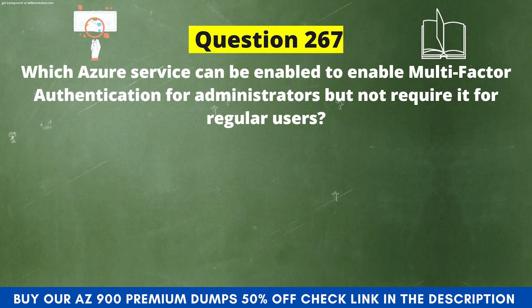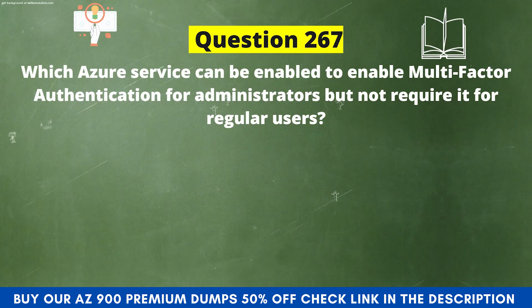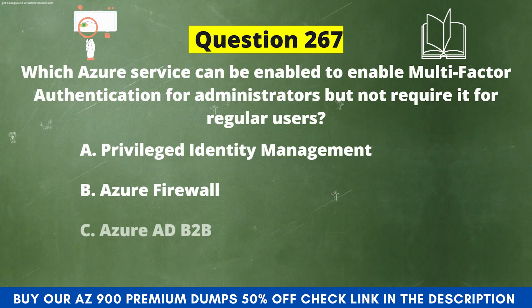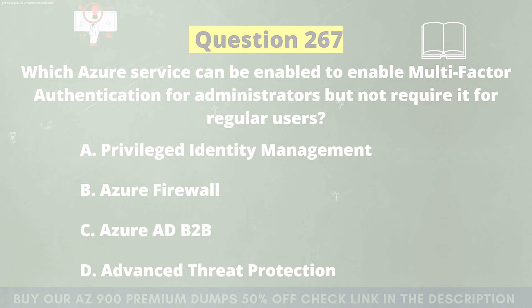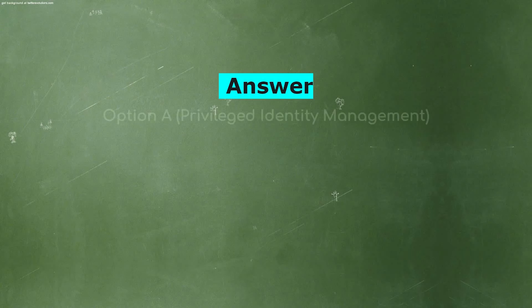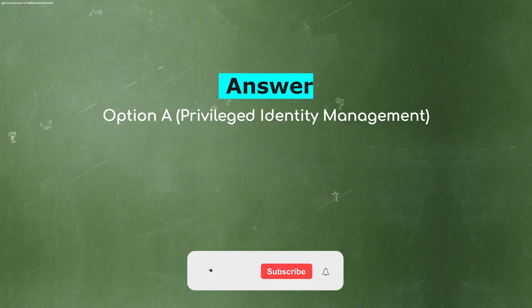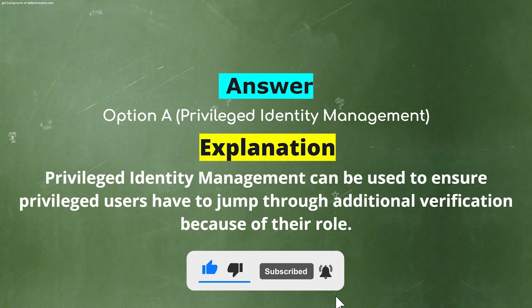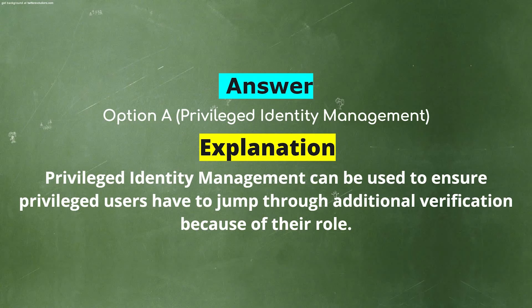Which Azure service can be enabled to enable multi-factor authentication for administrators but not require it for regular users? Option A, Privileged Identity Management. Option B, Azure Firewall. Option C, Azure AD B2B. Option D, Advanced Threat Protection. And the correct answer is Option A, Privileged Identity Management. Privileged Identity Management can be used to ensure privileged users have to jump through additional verification because of their role.